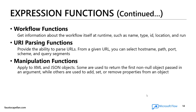And finally, it contains manipulation functions. These functions apply to XML and JSON objects. Some are used to return the first non-null object passed in an argument, while others are used to add, set, or remove properties from an object.